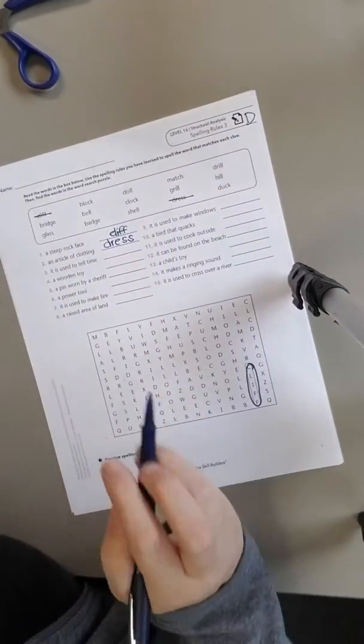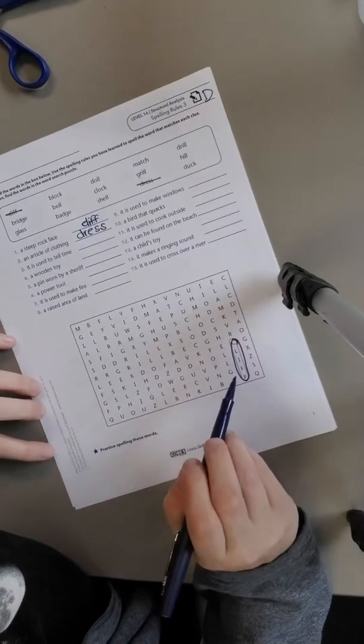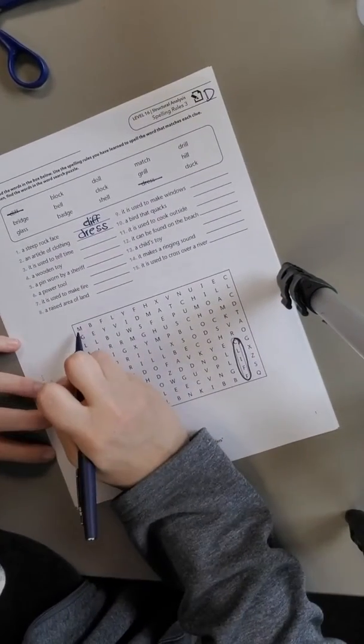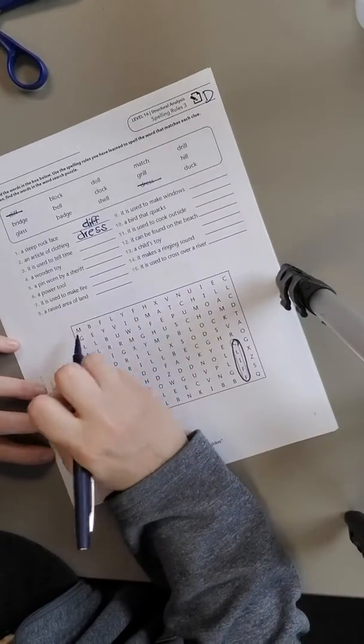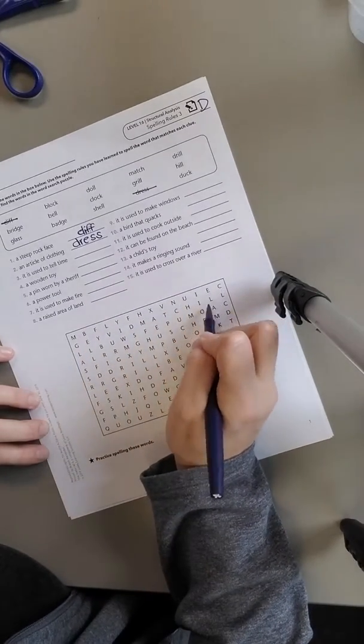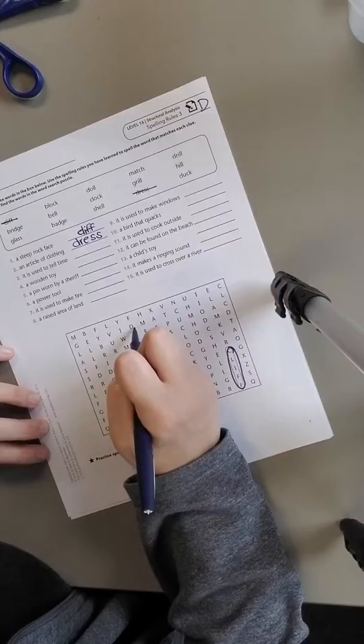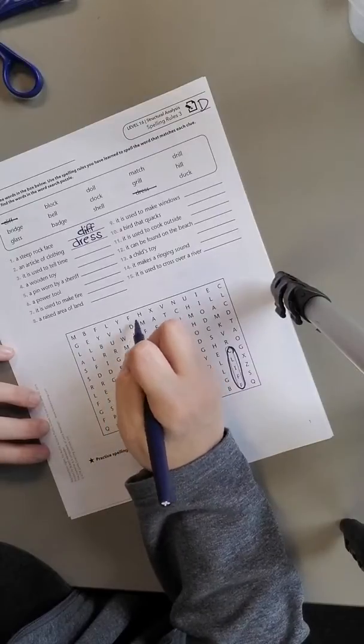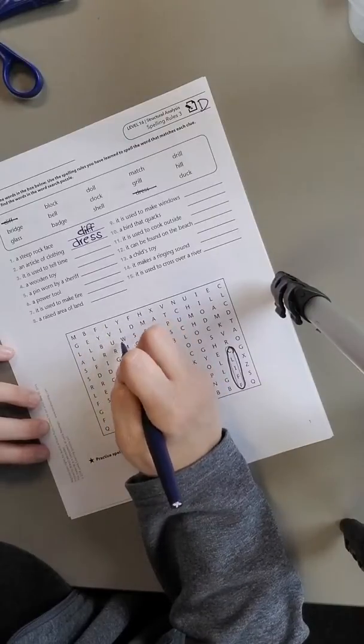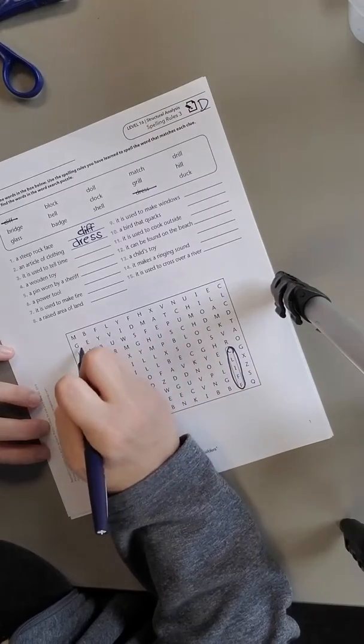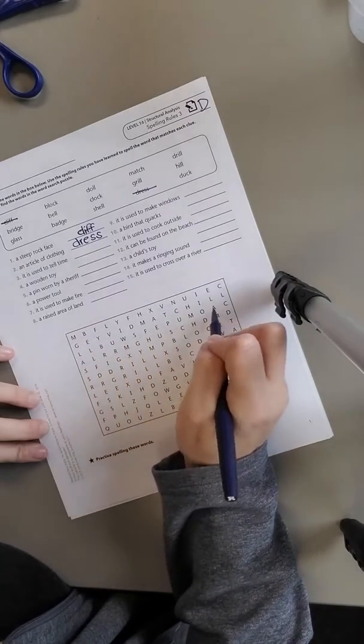The way I do these is I start over here at the side and look for the first letter. I'm looking for a D. Oh, here's a D. I'm going to look next to it for the next letter in the word, which is R. Nope, none there. I go on until I find another D. Here we go, nope.